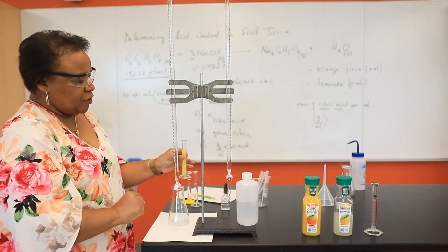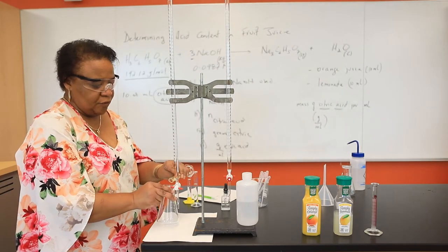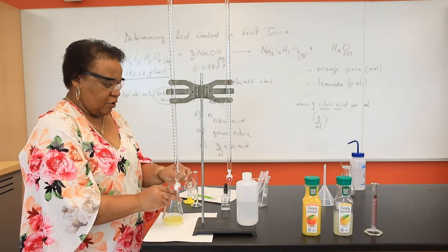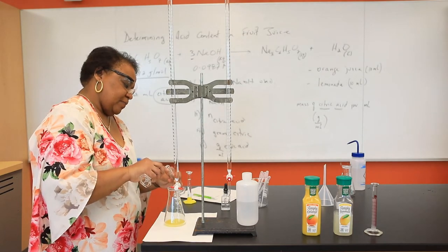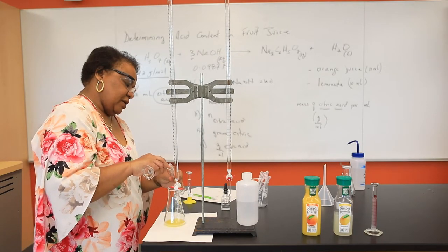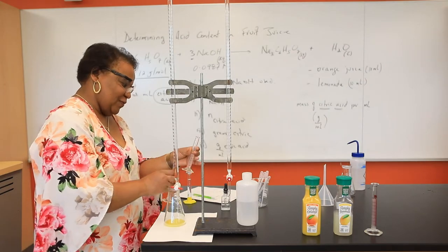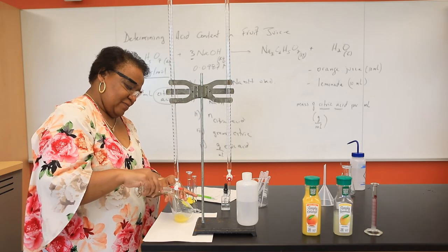In both cases, I'm going to be using 10 mLs of my fruit juice. I'm going to transfer that to my Erlenmeyer flask. And then I'm going to rinse my graduated cylinder with 10 mLs of water.